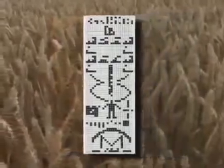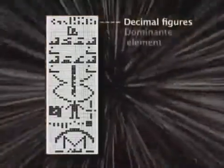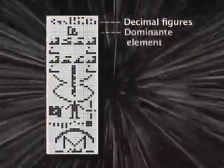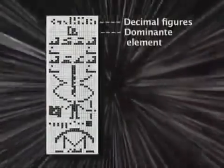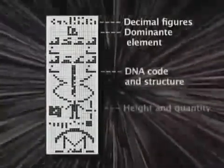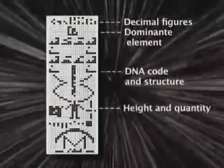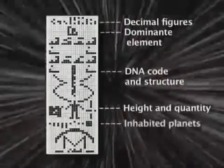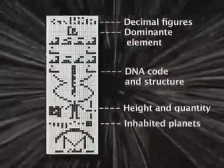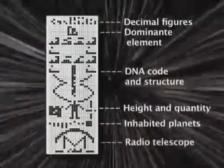Sagan's message explained our calculation system, the dominant chemical substances within the elements that create life on Earth, about our DNA code, human height and quantity, and that we live on the third planet in our solar system. And lastly, a sketch of our radio telescope.